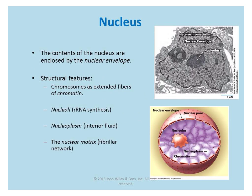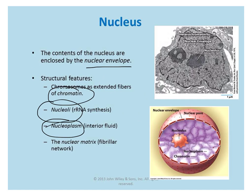The first organelle we're going to cover is the nucleus, which is enclosed by what's called the nuclear envelope, which is a double bilayer. Important structural features include the chromatin — all the DNA and its associated proteins — as well as a nucleolus, or nucleoli, which is a high site of RNA synthesis, so ribosome synthesis. There is also interior fluid called the nucleoplasm inside the nucleus.